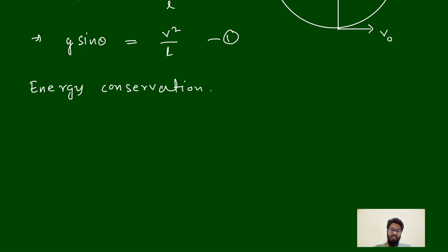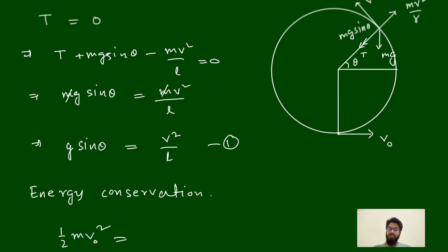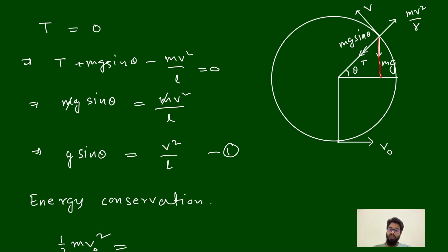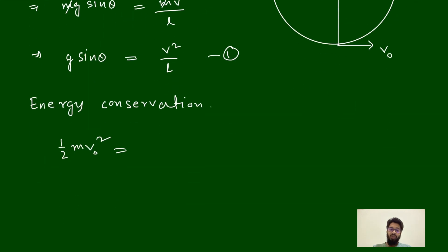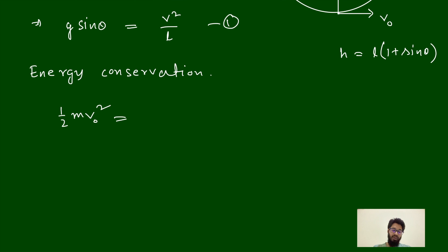At lowest point, energy is half of mv0 square and potential energy considered as zero. At this point, what will be the height? This height is theta, so this is sine theta. Then this is length L to L sine theta, and this is L plus L sine theta. So h is equal to L(1 plus sine theta). We can say half of mv square plus mgh, in place of h we can say...